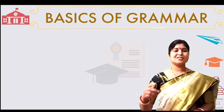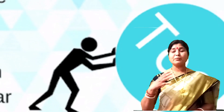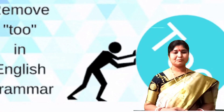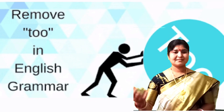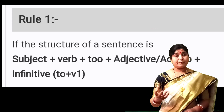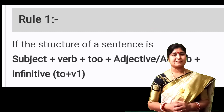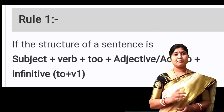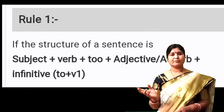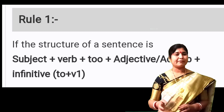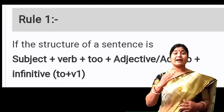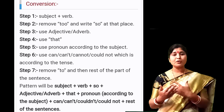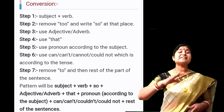The first one is removing 'too' in English grammar. If the structure of the sentence is subject plus verb plus too plus adjective or adverb plus to plus infinitive, then the conversion of these means we have to follow seven steps.